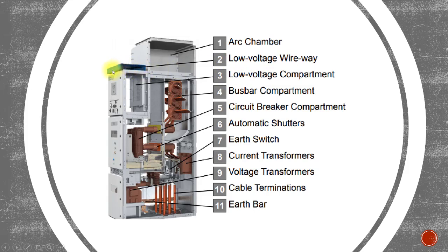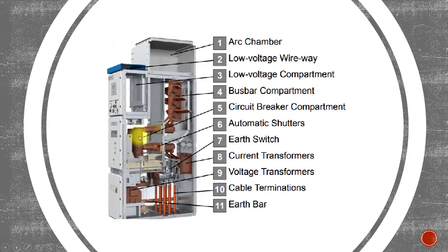Number three is the low voltage wireway, where all the LT cables are routed — you can see a kind of cable tray trolley arrangement here. Number four is the busbar compartment; you can see the busbars and you can extend them to the next panel and connect them. Number five is the circuit breaker compartment with male and female contact parts visible.